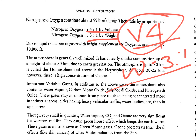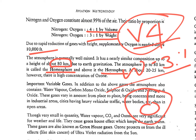Due to the rapid reduction of gases with height, supplemental oxygen is needed above 10,000 feet. The atmosphere is generally well mixed with a nearly similar composition up to a height of about 80 km. The region up to 80 km is called the homosphere, and above it is the heterosphere.